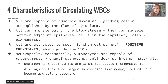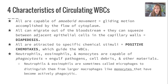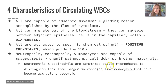There are four characteristics of circulating white blood cells. They are all capable of amoeboid movement, which is a gliding motion helped by the flow of cytoplasm. They can all leave the bloodstream through a process called diapedesis, squeezing through adjacent epithelial cells in the capillary walls. They are attracted to specific chemical stimuli known as positive chemotaxis, which guides them to where they need to go. Neutrophils, eosinophils, and monocytes are capable of phagocytosis — engulfing pathogens, cell debris, and other materials. Neutrophils and eosinophils are sometimes called microphages because they are smaller than the larger macrophages, like monocytes that have become actively phagocytic.